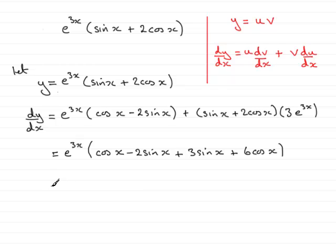And what I can do now is just simplify the bracket by gathering up like terms. So we've got cos x and 6 cos x. So that's clearly 7 cos x. And minus 2 sine x plus 3 sine x is just sine x.